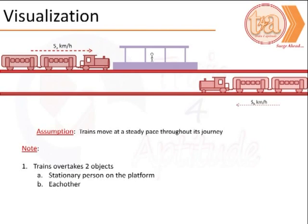We could visualize the scenario as follows: train A moving at speed SA km/h is moving towards a platform on which an individual is standing. Train B moving at speed SB km/h is moving in the opposite direction. The assumption is that the trains move at a steady pace throughout the journey.